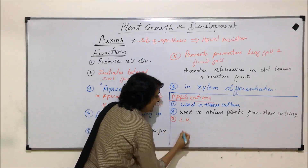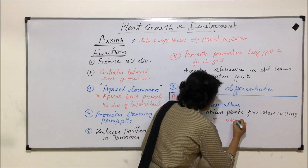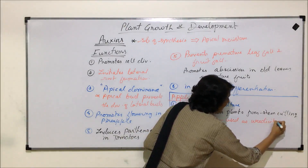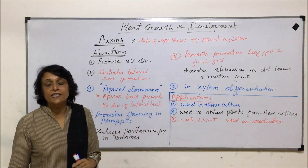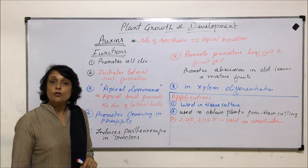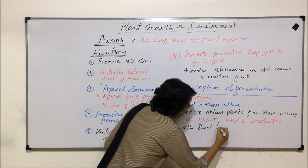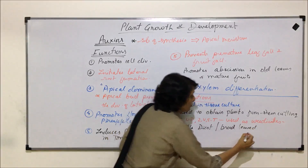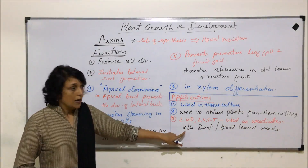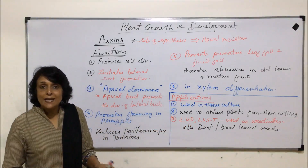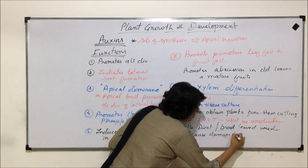The same property is also used to prevent weeds. 2,4-D and 2,4,5-T are used as weedicides — substances or chemicals that kill weeds. Auxins are very effective in killing dicot weeds, also known as broad-leaved weeds. Importantly, 2,4-D and 2,4,5-T do not cause any damage to monocots.